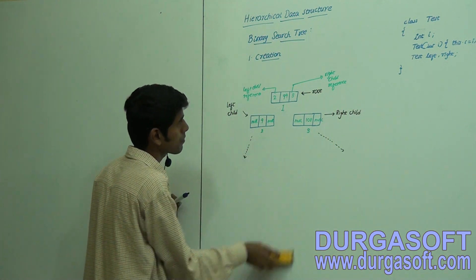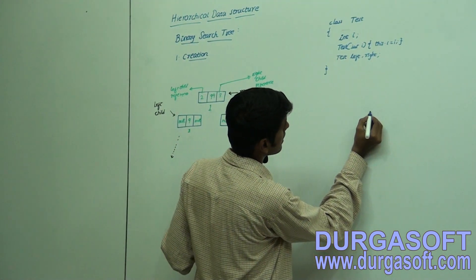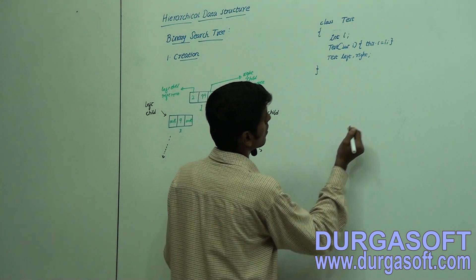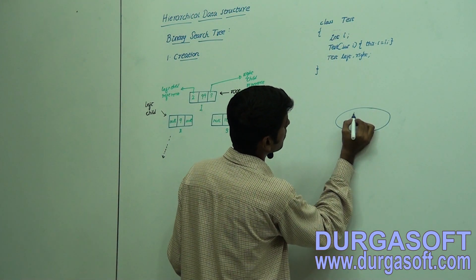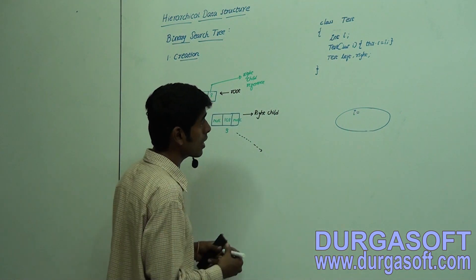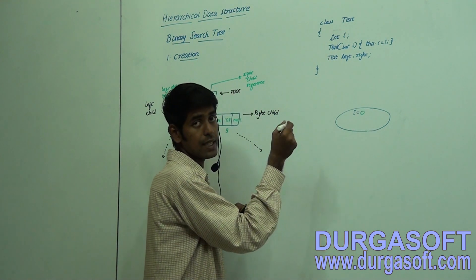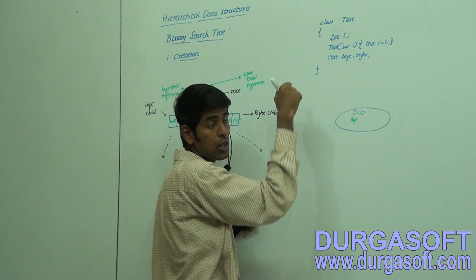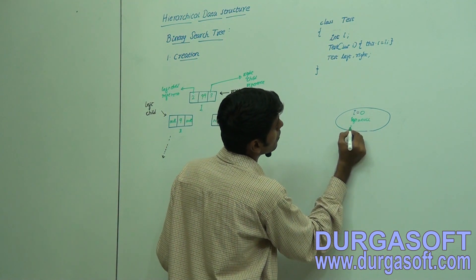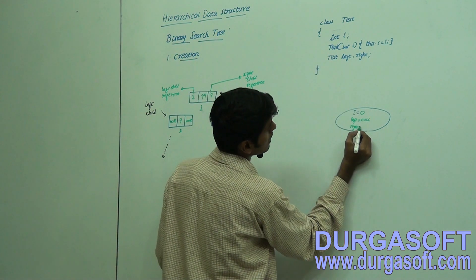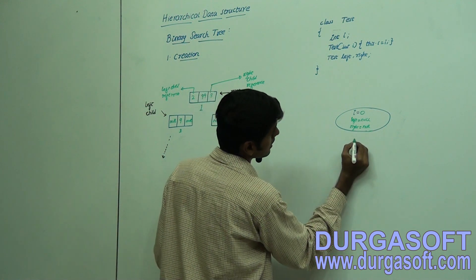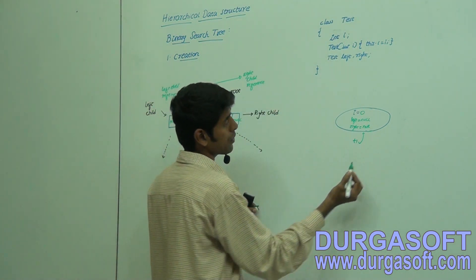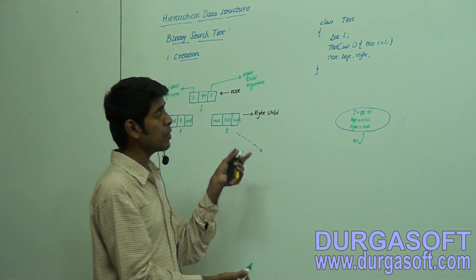Let us go for the creation. If I create any instance — say 'test' — there will be a field 'i' whose default value will be zero if no initialization is performed, as JVM will initialize it. The 'left' field is of type 'test', a user-defined data type, so its default value will be null. Similarly, 'right' is also of type 'test' so its default value is also null.